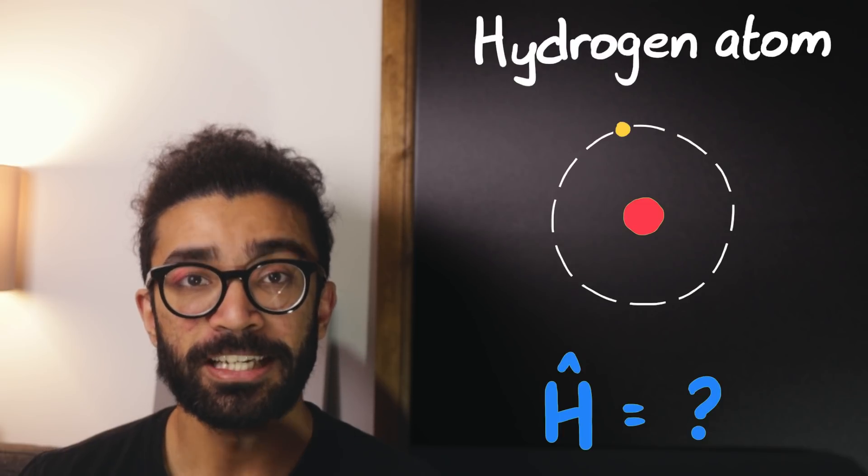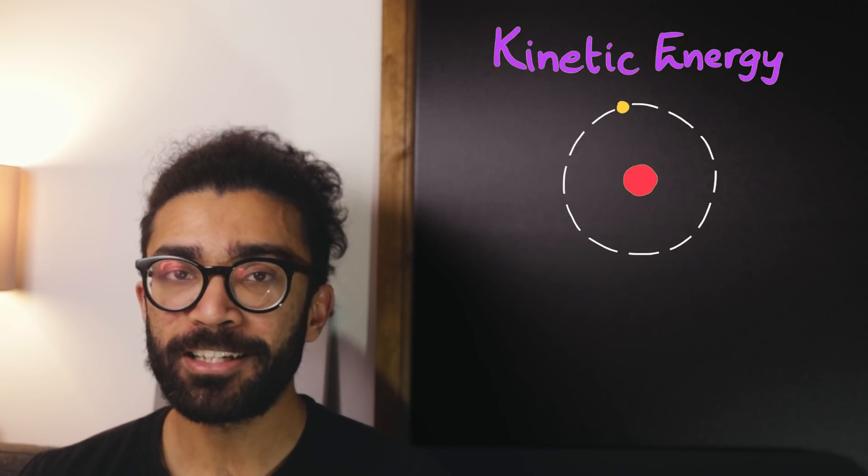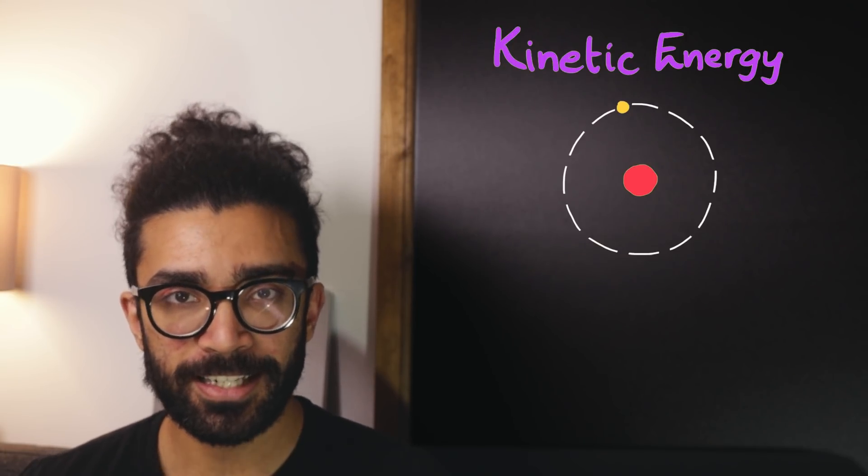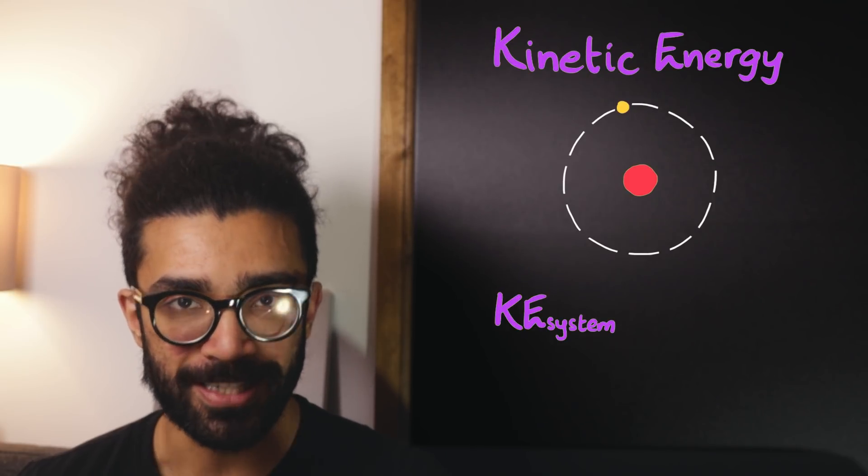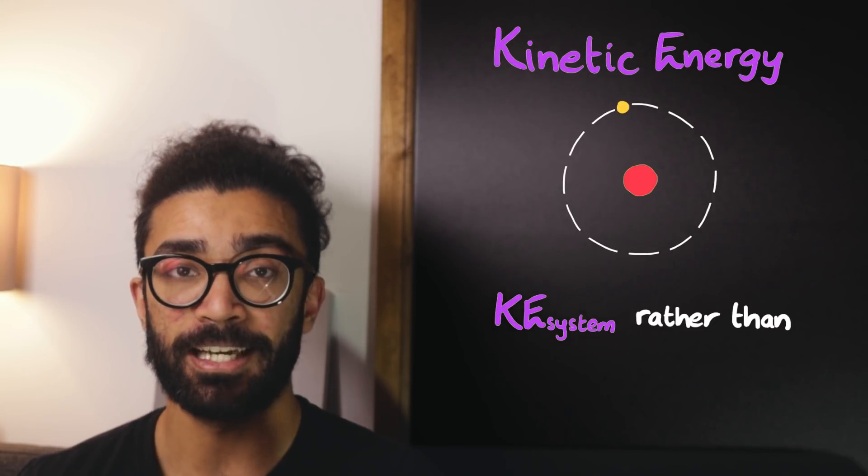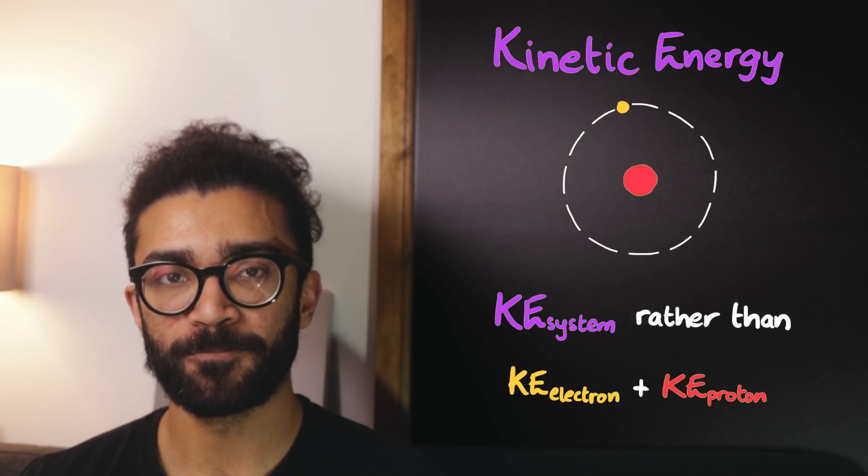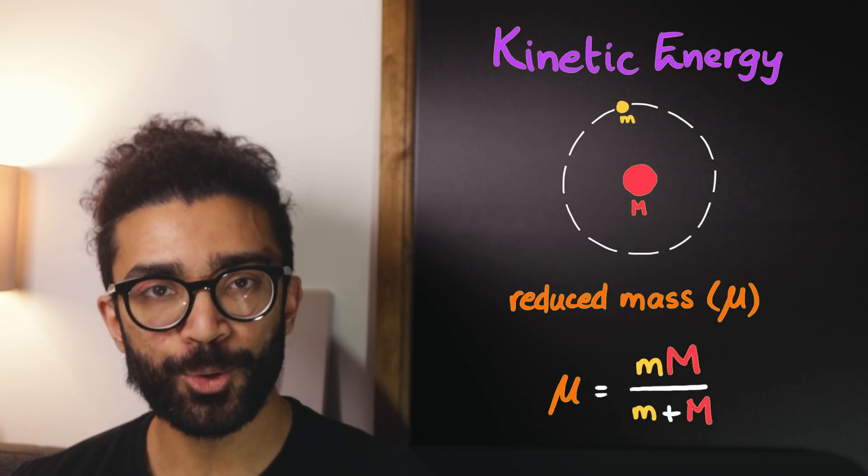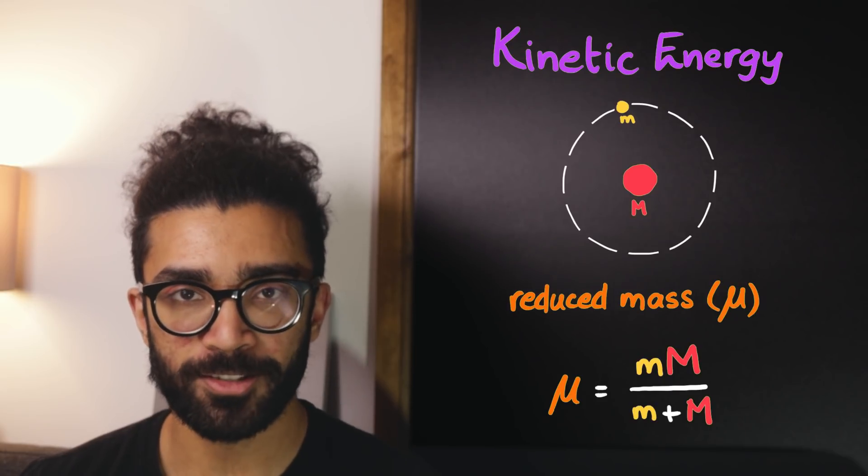First, let's look at the hydrogen atom's kinetic energy. To keep things simple, we will consider the kinetic energy of both particles together, rather than the kinetic energy of each individual particle. We can do this by calculating what is known as the reduced mass of the pair of particles.